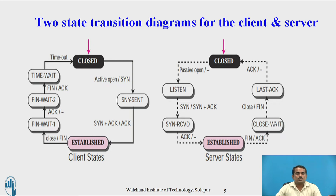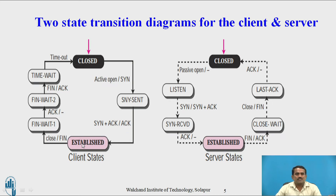Client states: initially the client is in the closed state. It performs an active open and sends a SYN (synchronization) to the server. After sending the SYN, the connection is established. This indicates a SYN plus ACK and acknowledgement of whatever request was sent by the client. After opening the connection, they can close or terminate the connection. In the fin wait 1 and fin wait 2 states — that is the time wait — in fin wait 1, the connection is not yet closed.